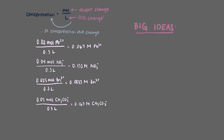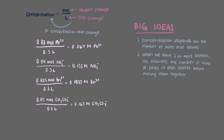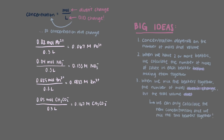In this video, we learned that concentration depends on the number of moles and volume. When we have two or more beakers, we calculate the number of moles of solute in each beaker before mixing them together. When we mix them, the number of moles doesn't change but the total volume does, so we can only calculate the new concentrations once we mix the two beakers together.